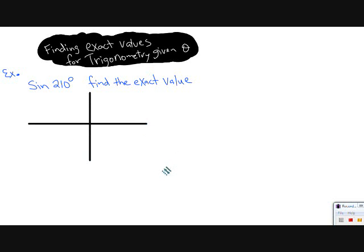To be able to locate the ray of where 210 degrees lies on. And in this case, it lies on the third quadrant.